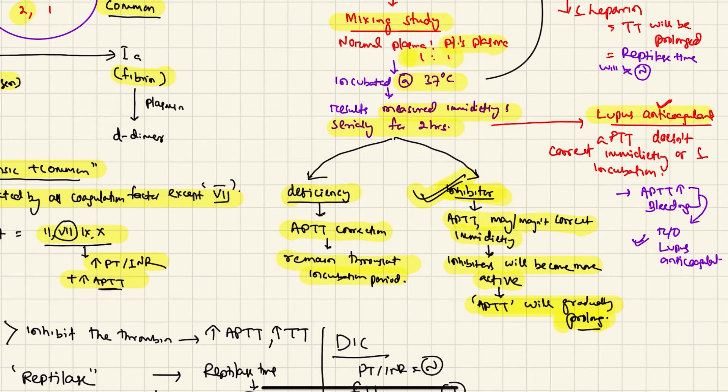Why not lupus anticoagulant? In case of lupus anticoagulant, aPTT does not correct neither immediately nor with incubation. With inhibitor it may correct immediately, but in lupus anticoagulant it does not correct immediately. However, in our case, patient presented with aPTT increase and bleeding. However, patients who have lupus anticoagulant will present with thrombotic complications.